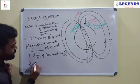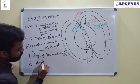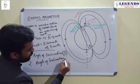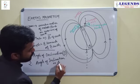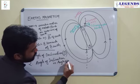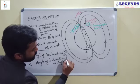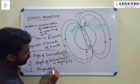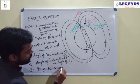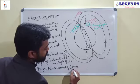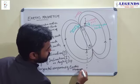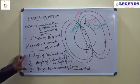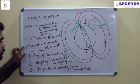The second one is angle of inclination, which has another name: dip angle or angle of dip. I am calling it I. And the third component is the horizontal component of Earth's magnetic field. So these three are called the magnetic elements of Earth.